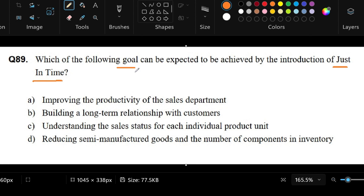The way to answer this question is to read each choice. Letter A says we improve the productivity of the sales department. If we introduce just-in-time, we can achieve improvements in the productivity of the sales department. Let's highlight 'sales department.'